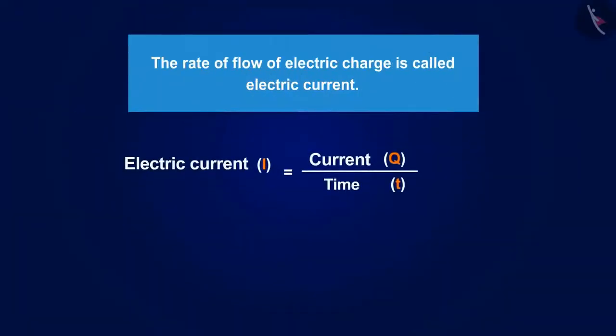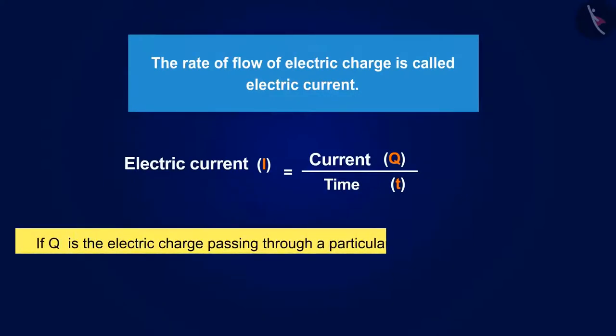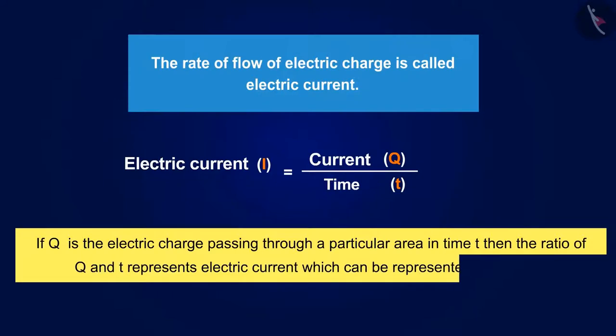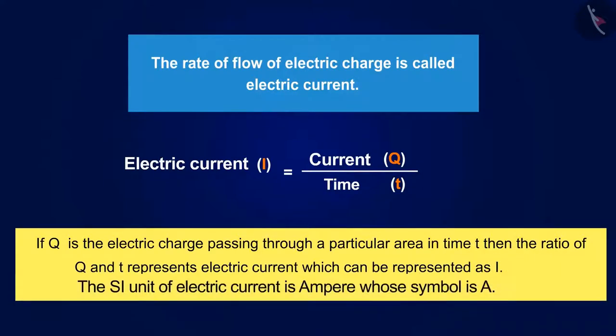The rate of flow of electric charge is called electric current. If Q is the electric charge passing through a particular area in time t, then the ratio of Q and t represents electric current, which can be represented as I. The SI unit of electric current is ampere, whose symbol is A.